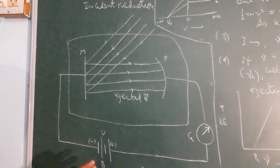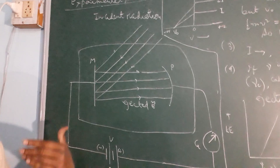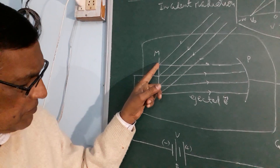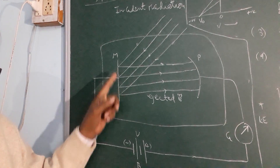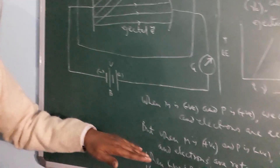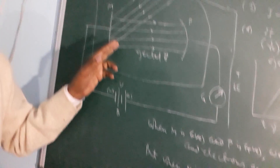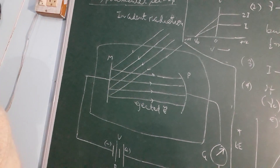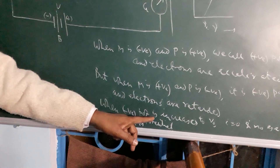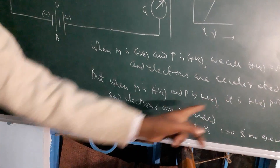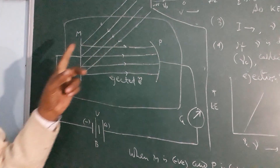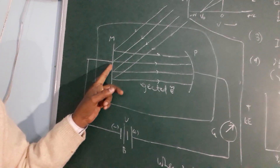When the positive pole of the battery is connected to the electron collector P and the negative pole to the metal M, we call this the positive potential. When the reverse connection is made — M connected to the positive pole and P to the negative pole — we call this the negative potential. Under negative potential, electrons are repelled due to the Coulombic repulsion of plate P and the attractive forces of the metal.